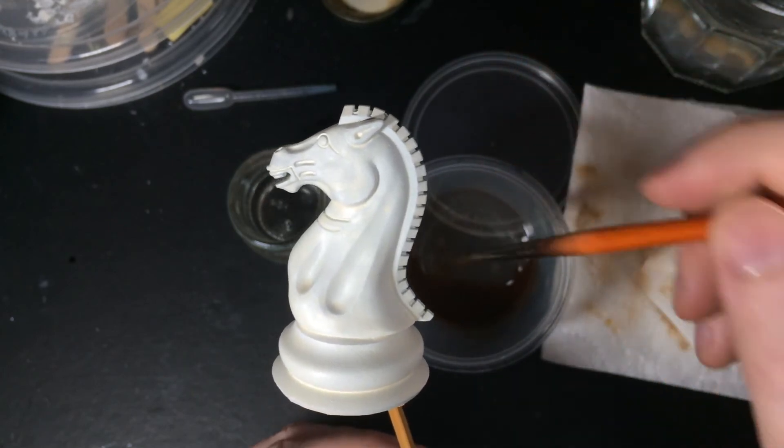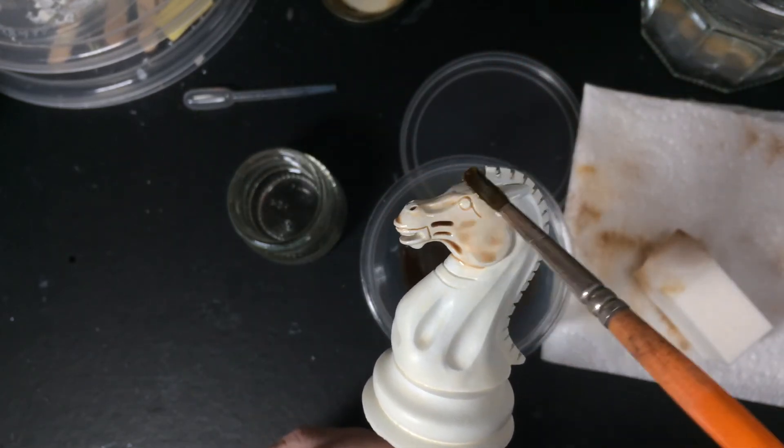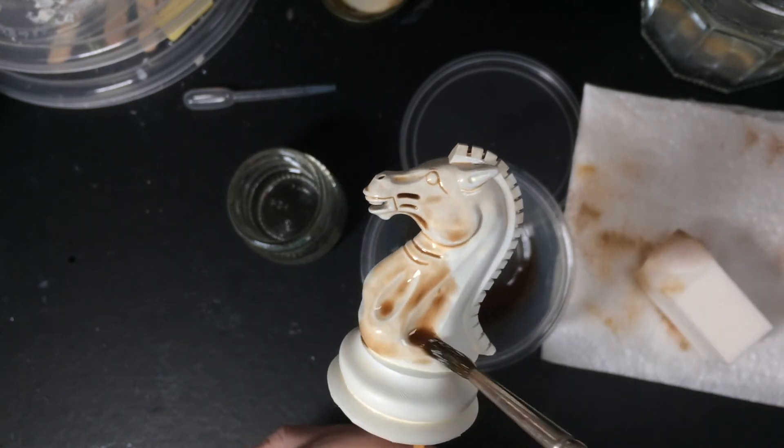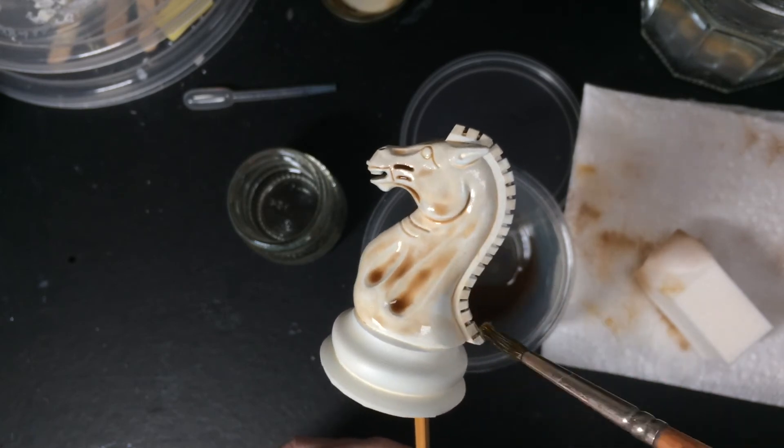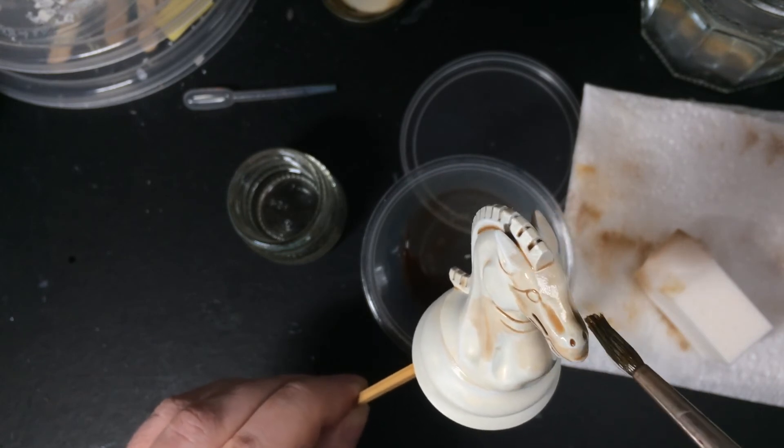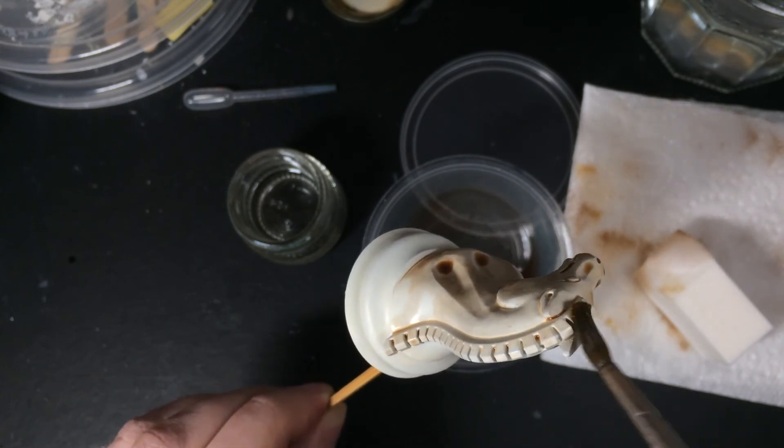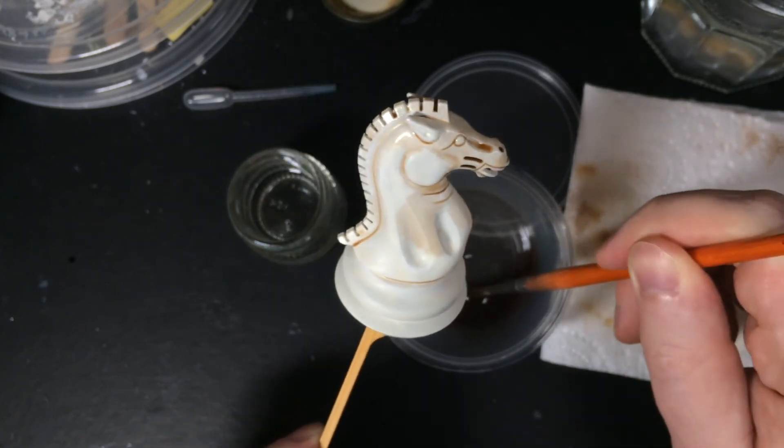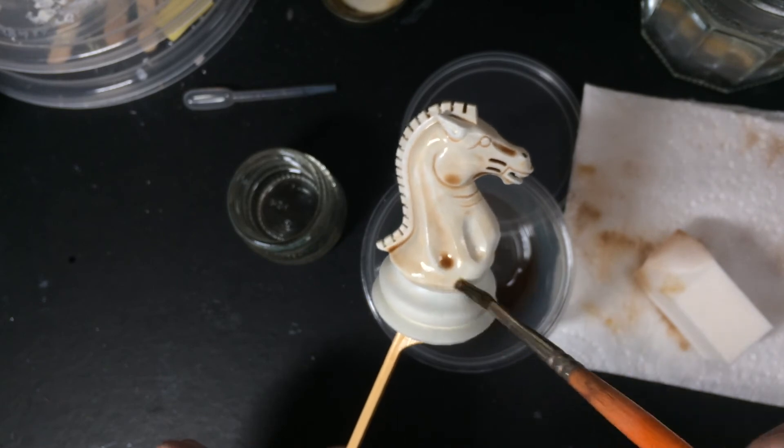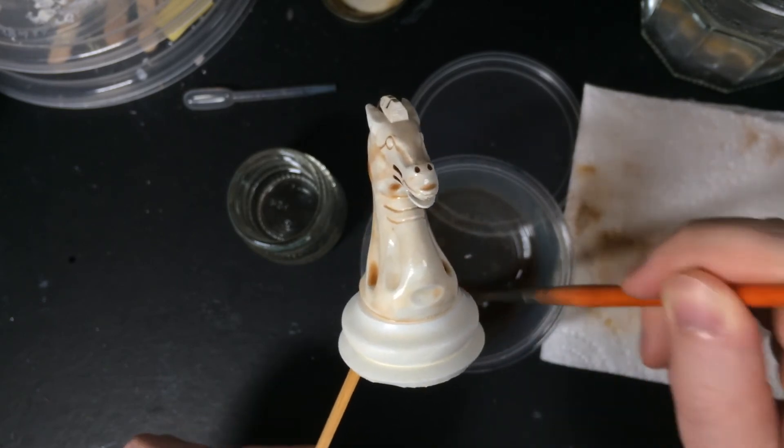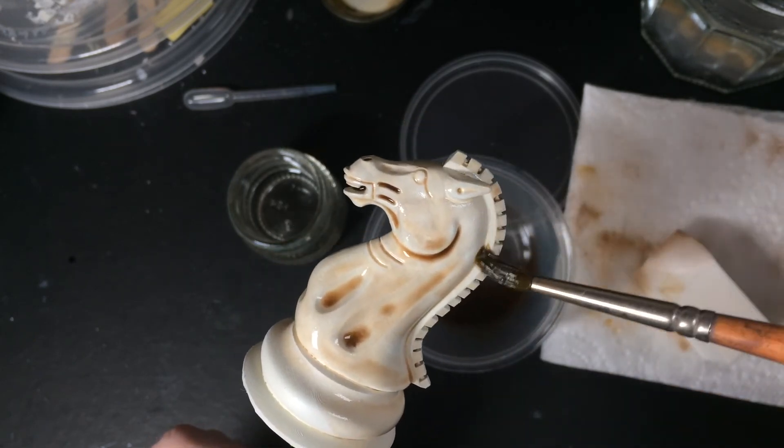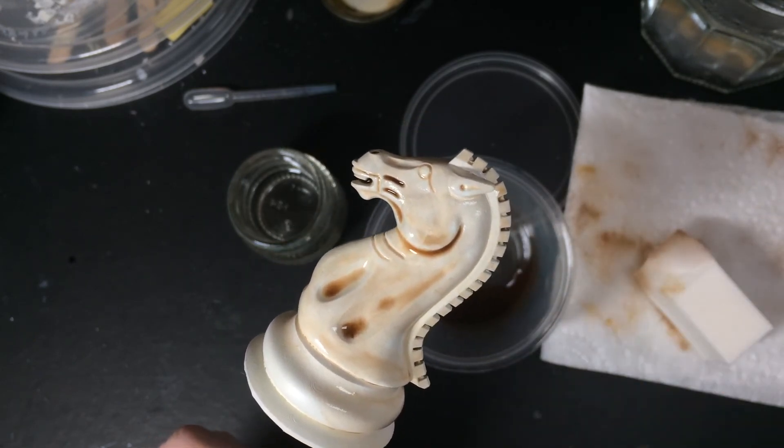Here's the same process on the knight. Again this solution is 20 parts thinner to 1 part oil paint. Just apply it all over the entire chess piece. Make sure you get into all the recesses in the mane.